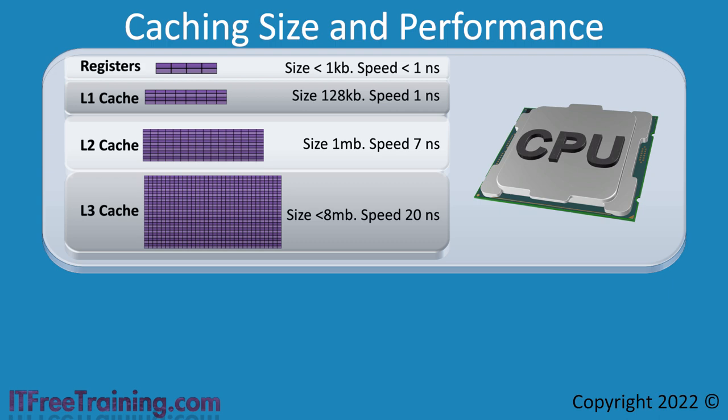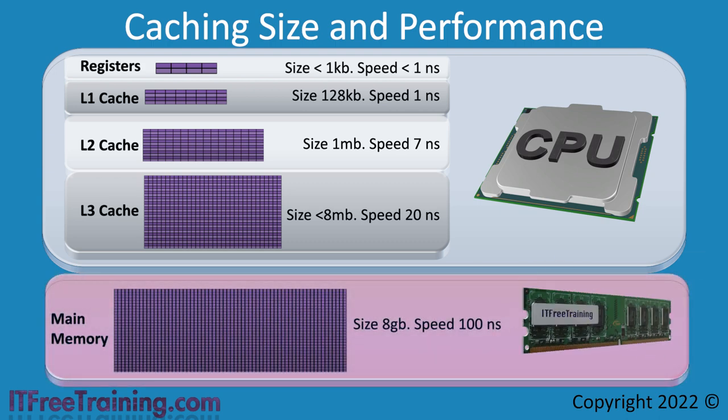If the memory the CPU requires is not in the cache, the next step is to get data from the memory modules. Memory modules are much larger than the cache and are generally measured in gigabytes. Access to the memory modules is not as quick as the CPU cache. In this example, memory modules take about 100 nanoseconds to transfer data to the CPU cache. Although that doesn't seem like a lot, in this example it is 5 times slower than L3 cache — making 100 nanoseconds a long time in computing terms. This illustrates the need for the CPU to execute instructions out of order to utilize any idle time effectively.